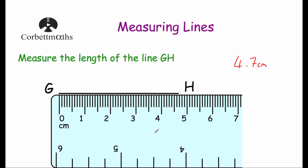Now if the question asks us to measure in millimetres — because there are ten millimetres in every centimetre — that would be ten, twenty, thirty, forty millimetres, and another seven, so it would be forty-seven millimetres. But if you were asked to measure in centimetres, it would be four point seven centimetres.